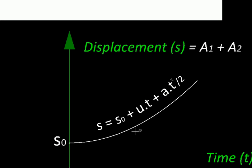And the full-fledged formula is here. The displacement is equal to s0 the initial displacement plus u into t initial velocity into time, the distance you would have covered even without the acceleration, plus the bonus at half at square.